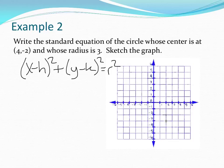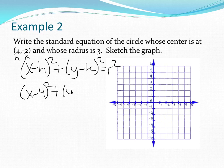Our center is 4, negative 2, which means that 4 is h and negative 2 is k. Let's plug that into our formula. We have x minus 4 squared plus y minus negative 2 squared equals 3 squared.